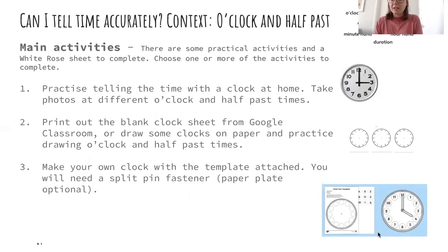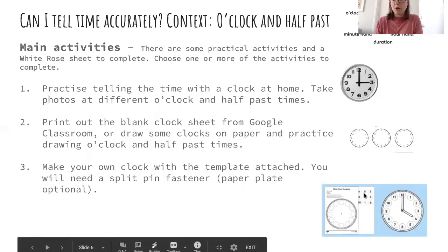And here is an activity for you to make your own clock. So you might have a split pin fastener. If you don't, don't worry. You can use a bit of blue tack or anything you've got at home, a bit of string to make the hands of your clock. You can have a go at making them move. And that is attached.